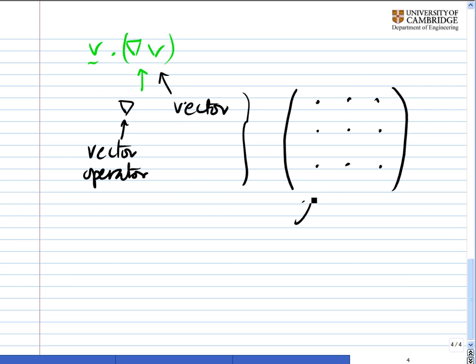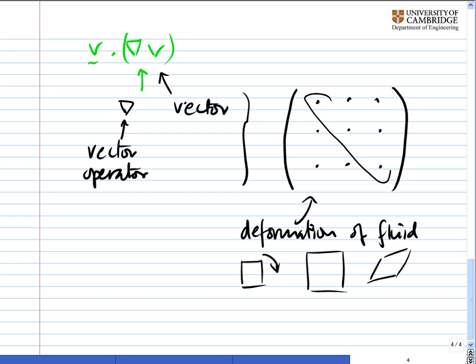And this matrix describes the deformation of a fluid, well, a fluid blob of any shape. But if you start off with something square, it gives you an idea of the rotation. It gives you an idea of how much it expands. And it gives you an idea of the shear that you get of that blob by looking at the diagonals in the case of expansion. And these are the other six terms there to give you an idea of the shear and of the rotation. But that's well beyond the scope of this course.